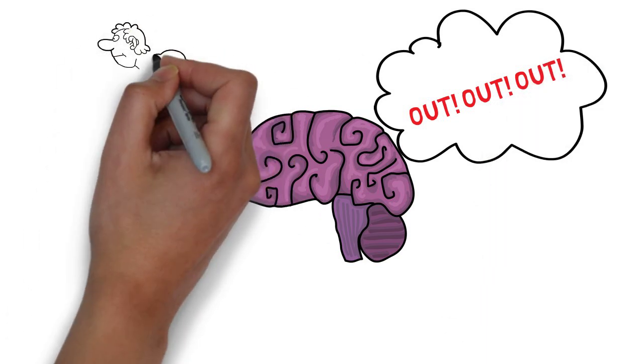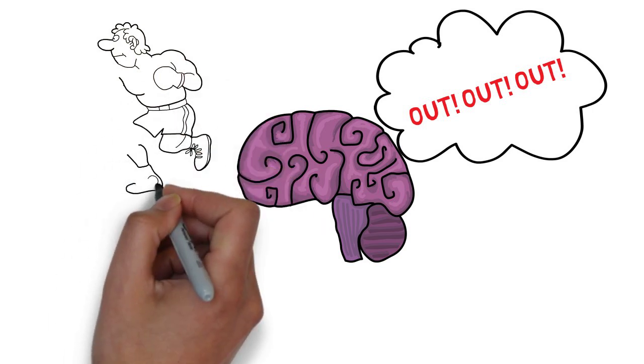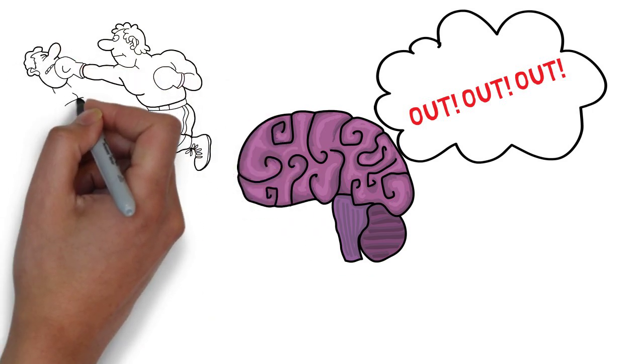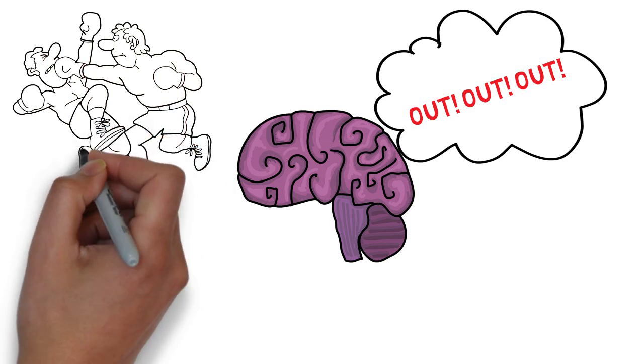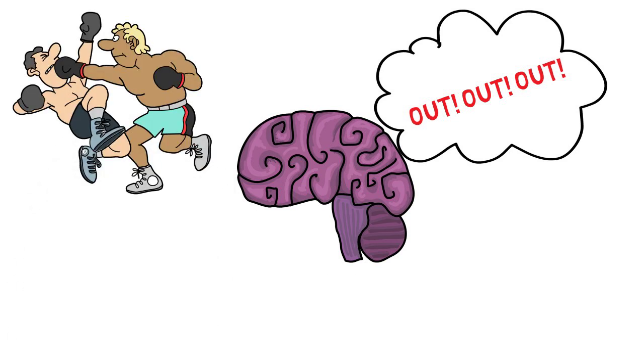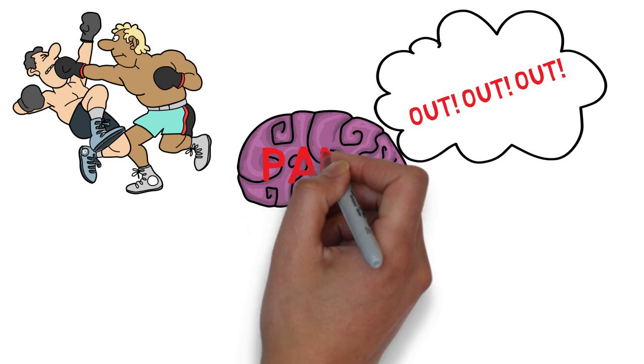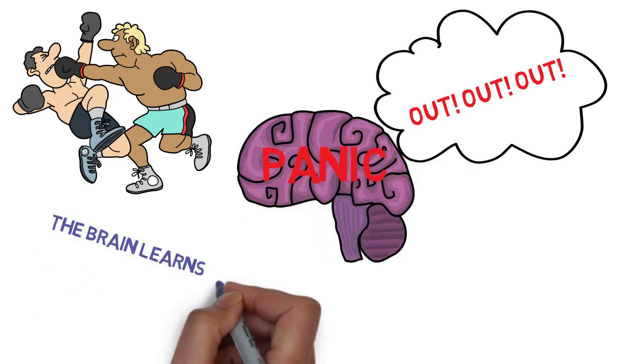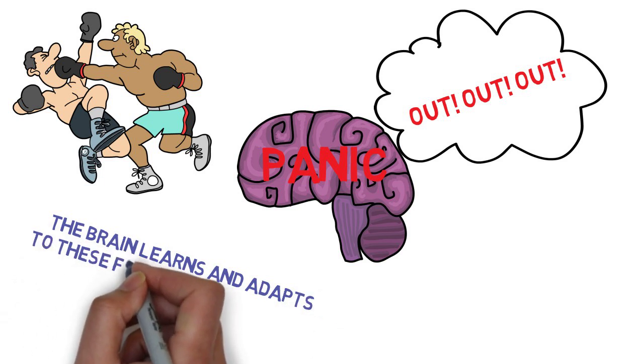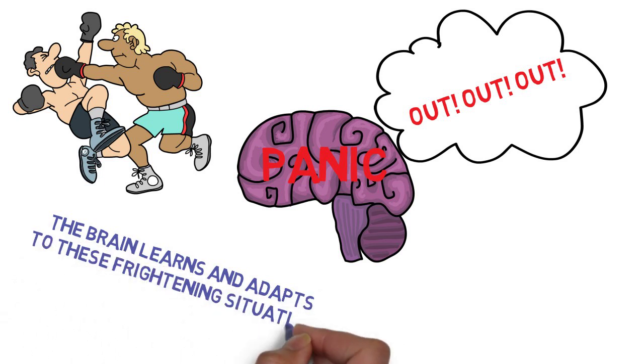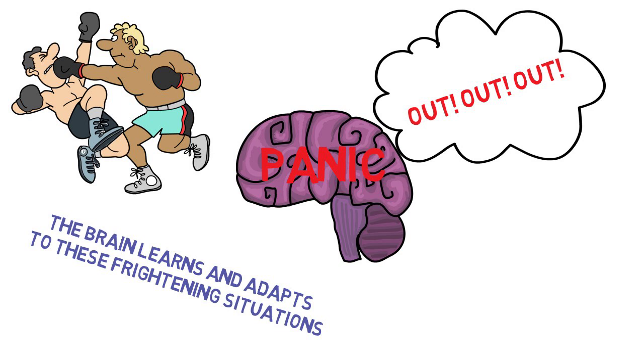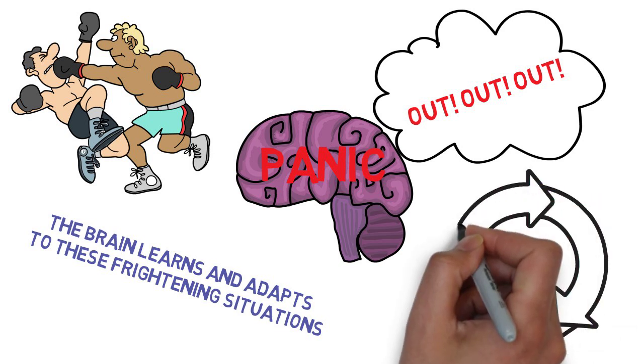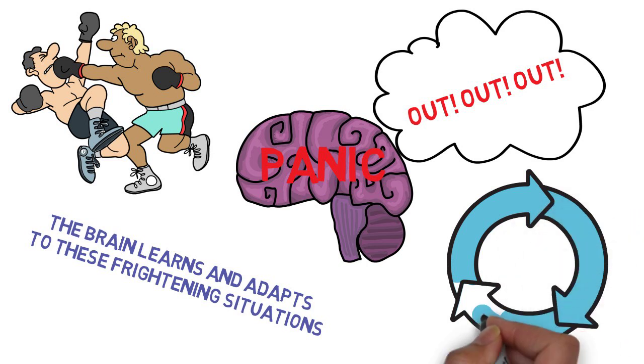The result is basically a battle between your conscious mind and the more instinctive primal part of the brain. This battle itself creates stress and unfortunately it is the latter that often gets the better of us, and we end up in a full blown panic attack. The real problem here is that the brain is programmed to learn and adapt to these frightening situations. So it's very likely that when you get into the same or very similar situation, you will dive right back into panic mode. Every time this happens, this fear is further embedded into your brain.